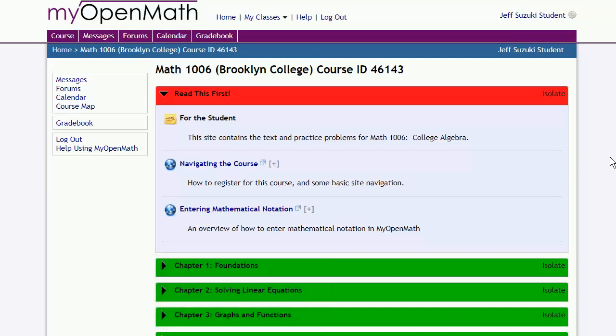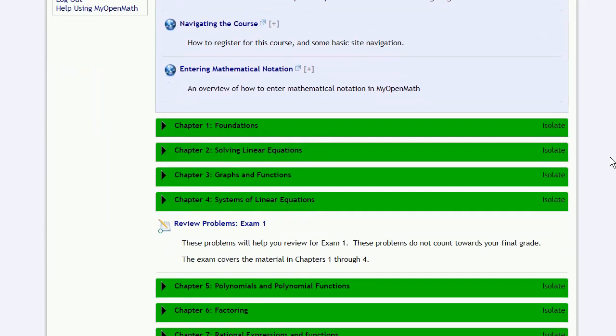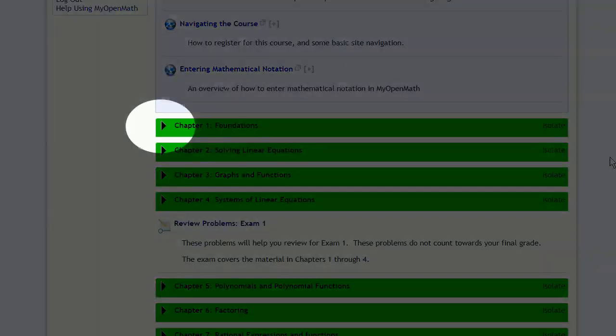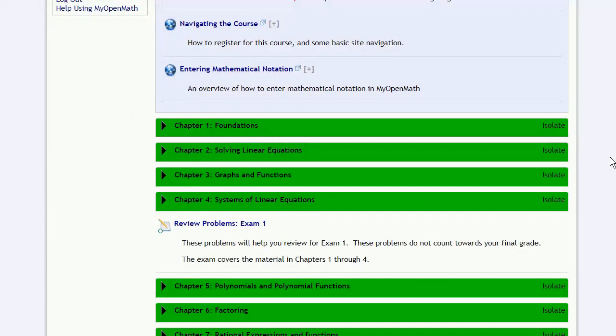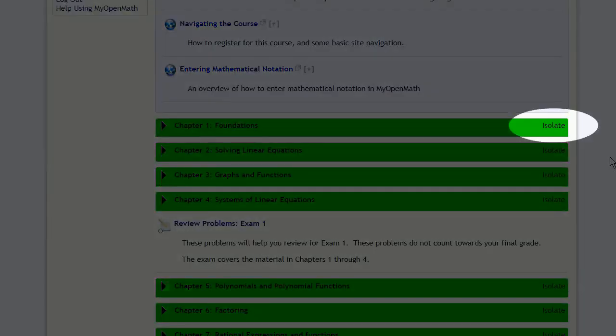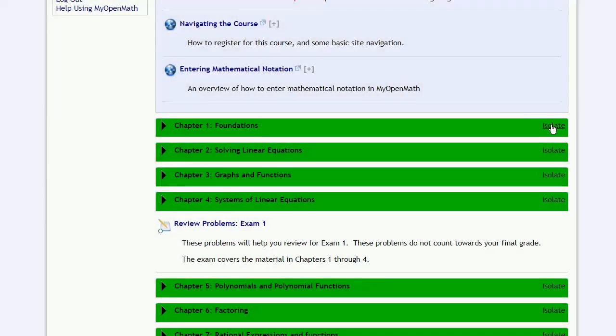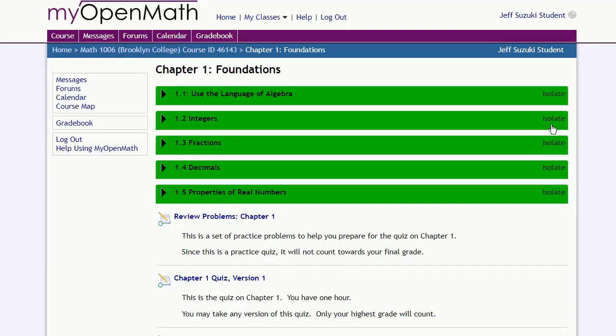So let's say we're working on chapter one, let's scroll down. And while we could click on the tab to open it, this will rapidly fill our screen with clutter. So it's better to use this isolate button over here.